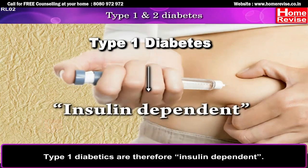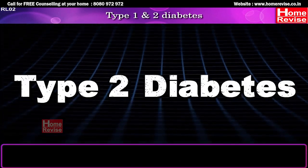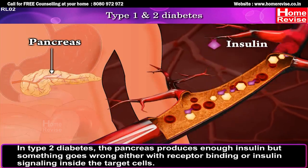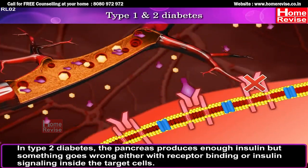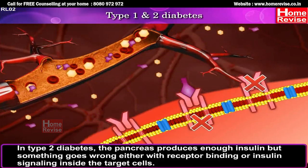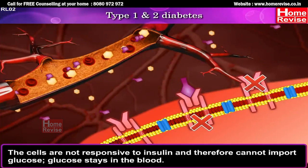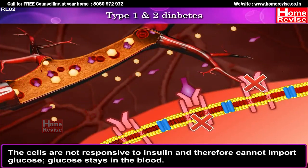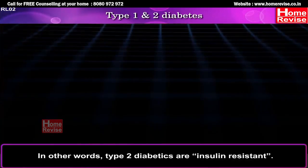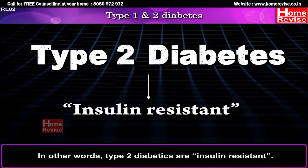Type 1 diabetes is normally managed with insulin injections. Type 1 diabetics are therefore insulin dependent. In Type 2 diabetes, the pancreas produces enough insulin, but something goes wrong either with receptor binding or insulin signaling inside the target cells. The cells are not responsive to insulin and therefore cannot import glucose — glucose stays in the blood. In other words, Type 2 diabetics are insulin resistant.